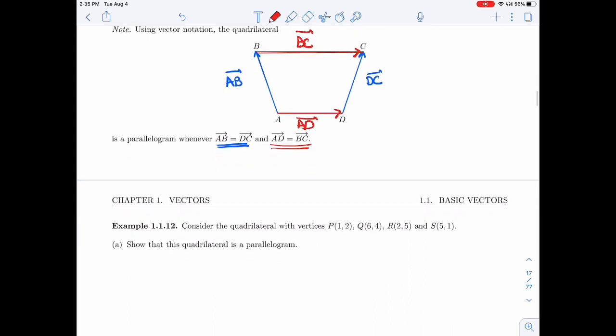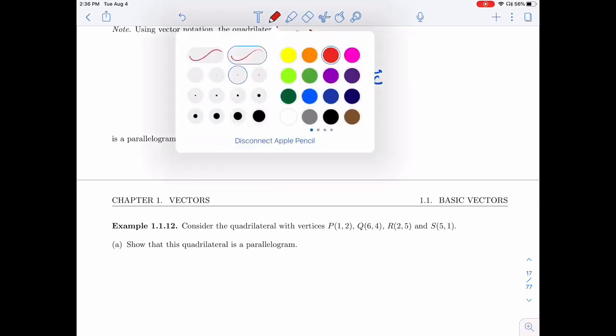In example 1.12, I have given 4 vertices, P, Q, R, and S, and I want to show that they form a parallelogram. I'm not really given a picture, so I don't know how to draw them yet, so I'll start with the algebra.